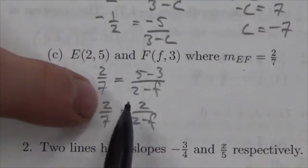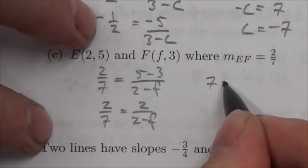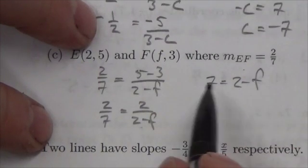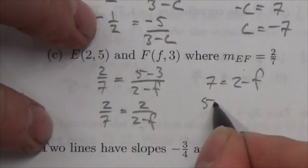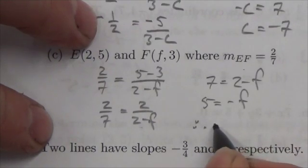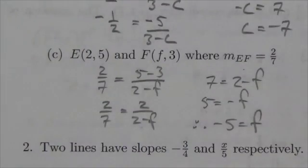The two fractions are the same. The numerators are the same. So the denominators must be the same. Subtract 2 from both sides and I get 5 is equal to negative f, and then divide through the negative so negative 5 is equal to f. Those are the answers we're looking for.